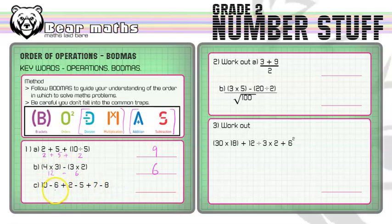So 10 take away 6 is 4 plus 2 is 6 take away 5 is 1 plus 7 is 8 and then take away 8 is nothing so we have nothing left after all that. That was a pain.